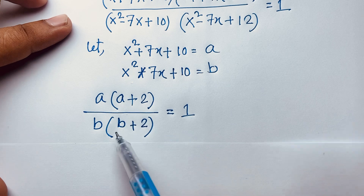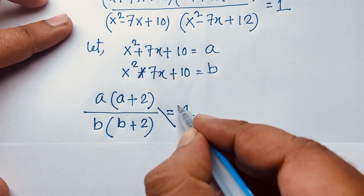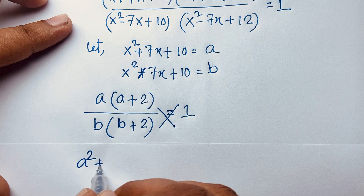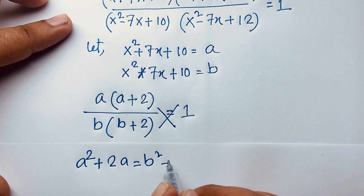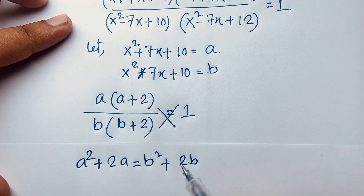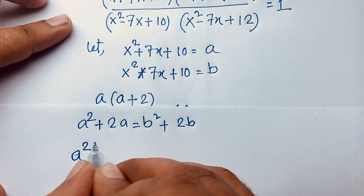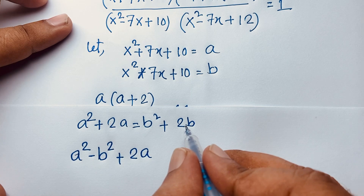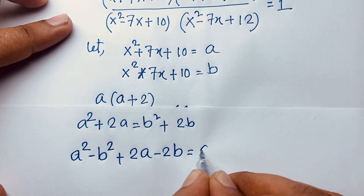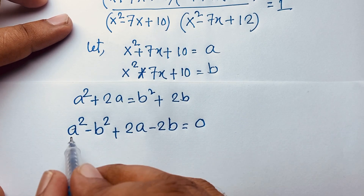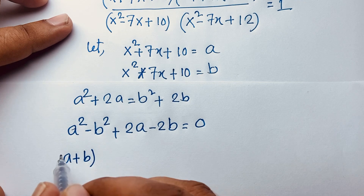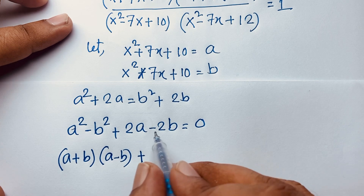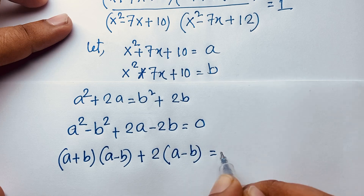Cross-multiplying, we get a² + 2a = b² + 2b. Moving terms: a² - b² + 2a - 2b = 0. Factoring, (a² - b²) = (a+b)(a-b), and 2a - 2b = 2(a-b). So we have (a-b)(a+b+2) = 0.